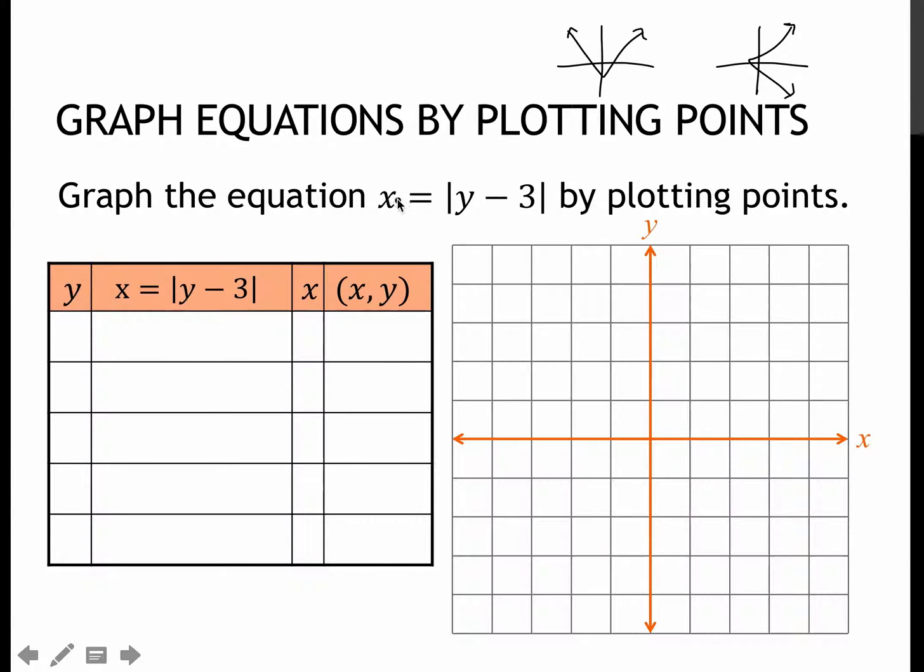Now, notice this is an x equals equation, so that is what's different about it as well. So I should be looking at a V that's sort of crooked off to the side. Which also means that when I'm making up values to plug in, I'm going to make up values for y. So I'm going to use negative 2, negative 1, 0, 1, and 2. Again, that's for the y value.